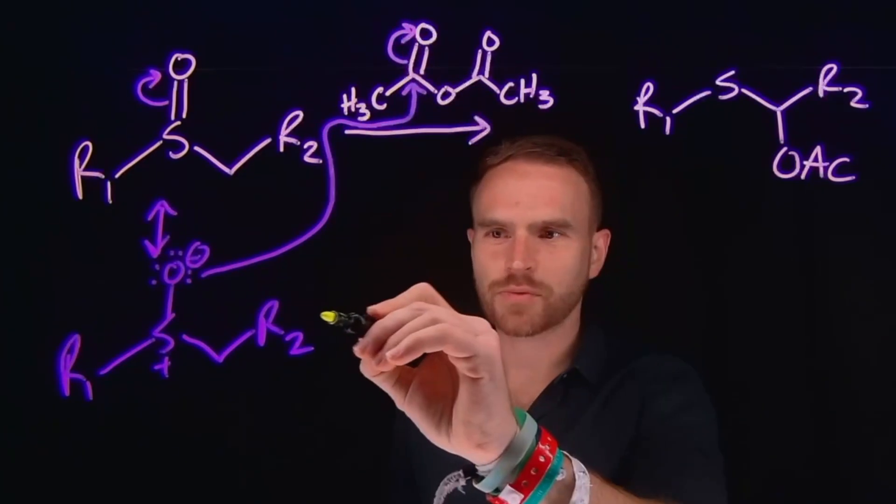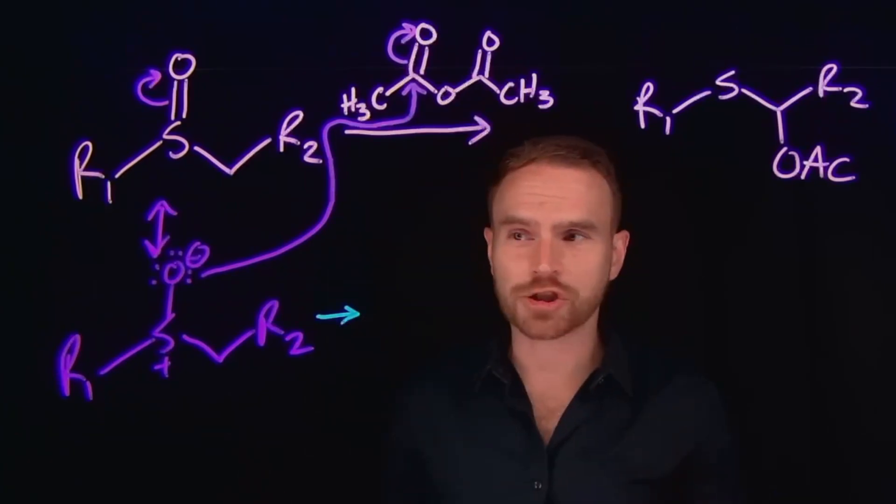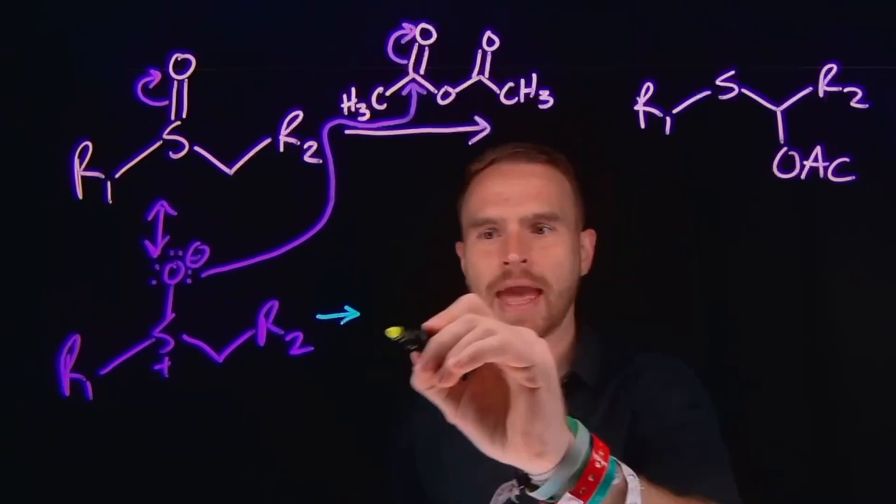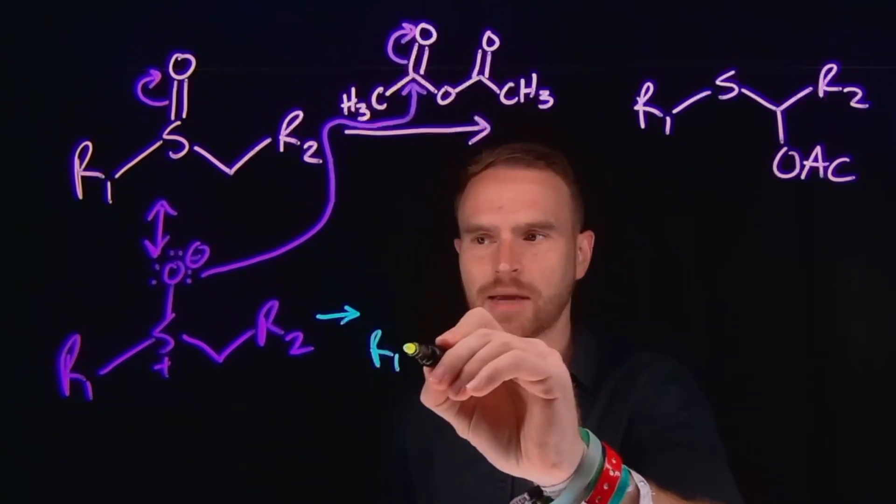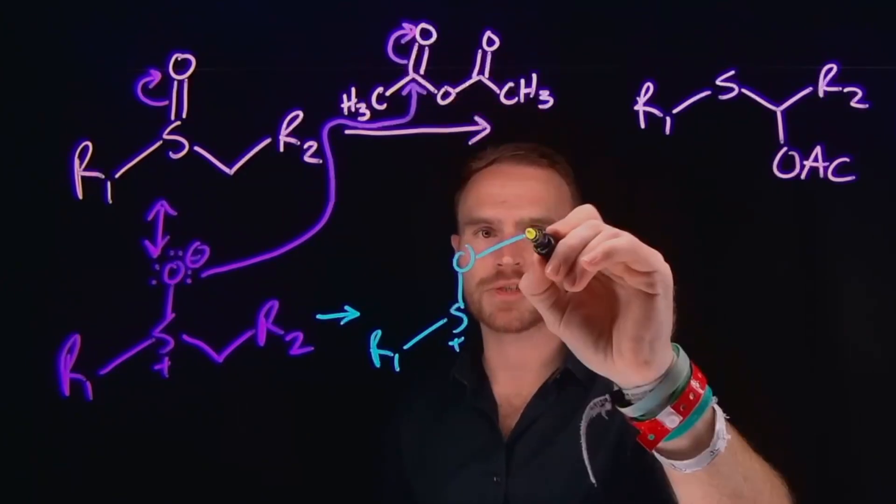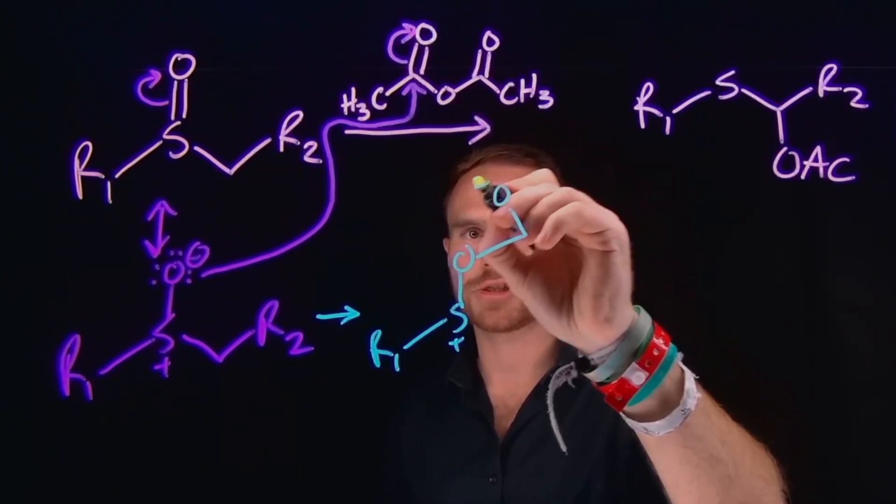So then the product of this reaction is going to maintain our charge because we have a positively charged sulfur and what's going to eventually become a negatively charged oxygen. And most of our molecule is going to look the same, where now we have this sulfur attached to this oxygen, which is now attached to this carbon position where we generated the negatively charged oxygen.